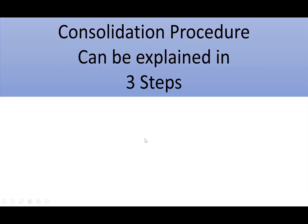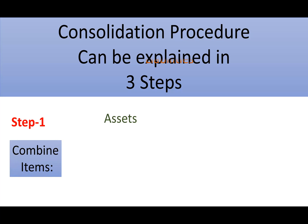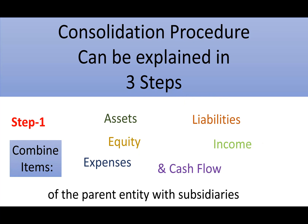IFRS 10 consolidation can be explained in three steps. Step one: combine the assets, liabilities, equity, expenses, income, and cash flows of the parent with those of its subsidiaries. So you add together the parent and subsidiary company's assets, equity, expenses, liabilities, income, and cash flows. Step two involves elimination.